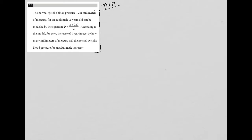So with this question, it says the normal systolic blood pressure P in millimeters of mercury for an adult male X years old can be modeled by the equation. And anytime I'm given an equation, I like to write it down. So P, which is the blood pressure,